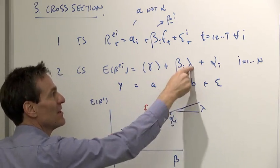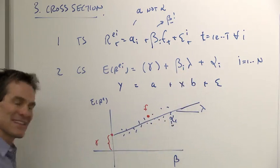This one's confusing because the letter beta is the right-hand variable in this regression. The y is expected returns. The beta is the right-hand variable. The lambda, the factor risk premium, is the slope that we're looking for.